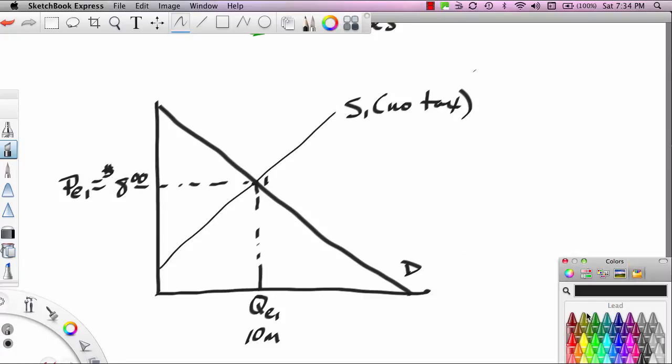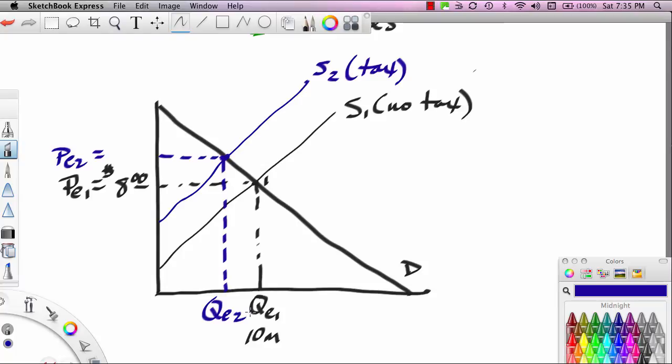Now let's assume that the tax of $2 is levied. So S2 is tax. Now this is the new equilibrium price and this is the new equilibrium quantity. I'm not going to give you those numbers yet because I want to show you a series of adjustments, how we get to that number.